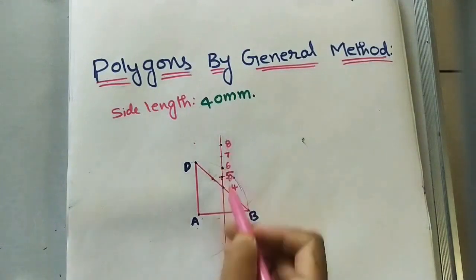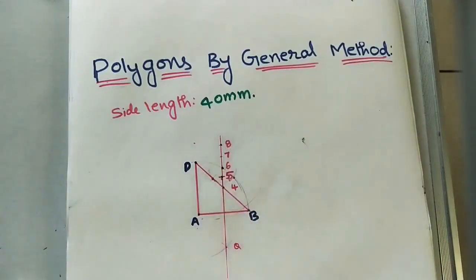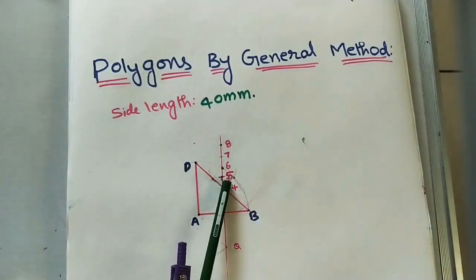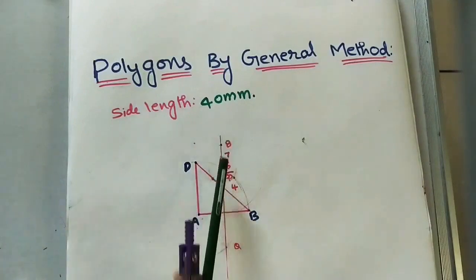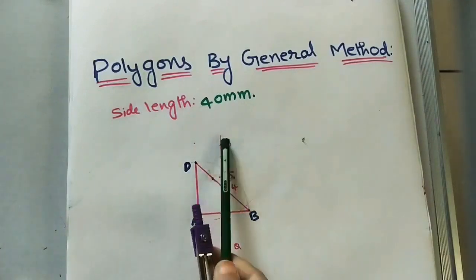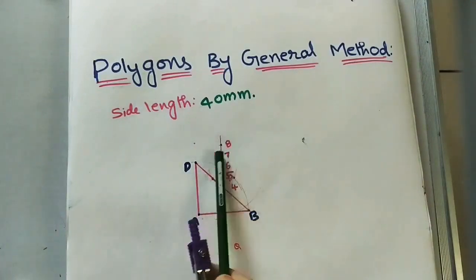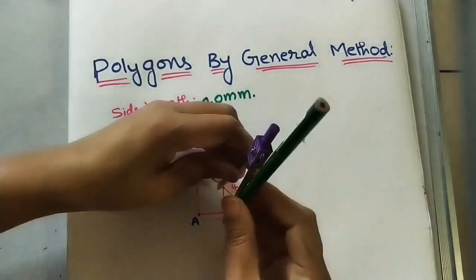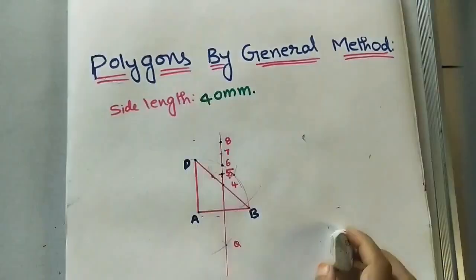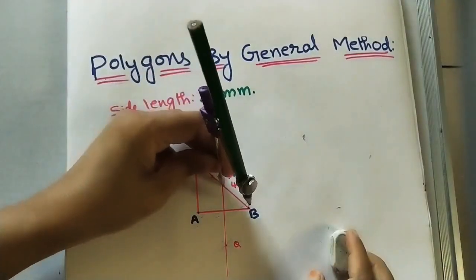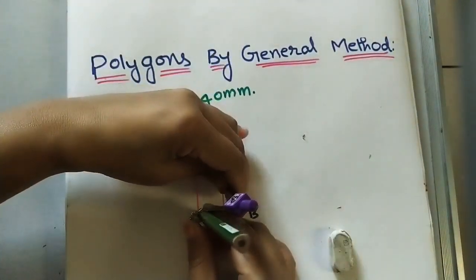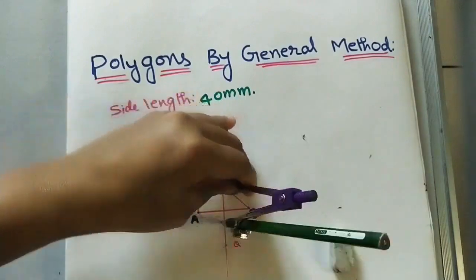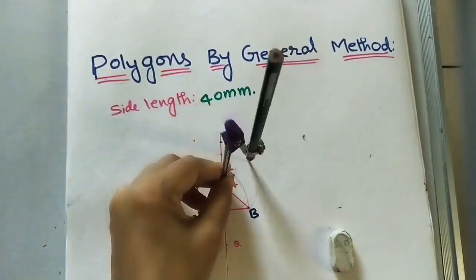These numbered points are the centers for building each polygon. For a square use 4 as center; for a pentagon use 5 as center, and so on. Take 4 as center, with 4A as radius, and draw a circle.